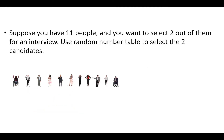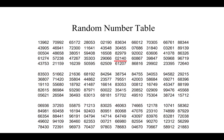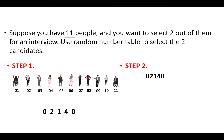Suppose you have 11 people and you want to select 2 out of them for an interview. Use the random number table to select the 2 candidates. In step 1, we number the people with 2 digit numbers. In step 2, we select a random number from the table. Suppose we have selected 02140. Since we are dealing with 2 digit numbers, we select two digits at a time. The first double digit number is 02, which corresponds to the second person, so we select the second person.